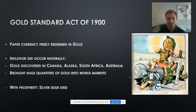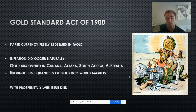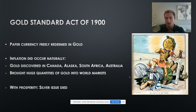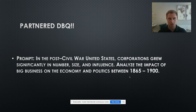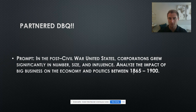The Gold Standard Act of 1900 established that paper currency could only be redeemed in gold. Ironically, we would see some inflation that helped the West anyway, as gold came in from Canada, Alaska, South Africa, and Australia. With this, the silver issue completely collapsed. Today's partner DBQ is on the exact things we talked about in the post-Civil War United States: corporations grew significantly in numbers, size, and influence — analyze the impact of big business on the economy and politics between 1865 and 1900.